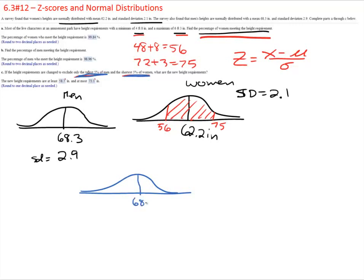So there's my curve. I still have an average of 68.3 and a standard deviation of 2.9. They want to exclude the tallest 5% of men, so that means this area here is going to be 5% of my data. And they want to know how tall is that. We are looking for the x that corresponds to that height. And then for the female picture, we are looking for the shortest 5%. So we are looking for this x value that has the shortest 5% of the women, and this one is at an average of 62.2 and 2.1. Now that we have our two distributions and we know what we are looking for, we just have to calculate those cutoffs, each one of those cutoffs.